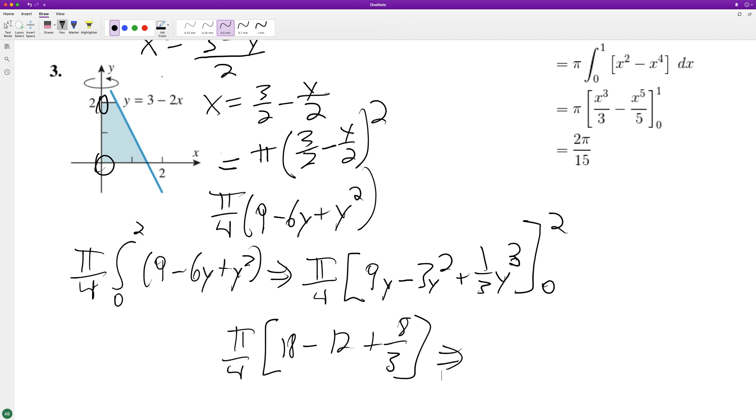And when you simplify this and multiply by pi over 4, we end up with 13 over 6 pi. And that's it. I hope this helped you out. I appreciate you watching the video and you have yourself a great day.